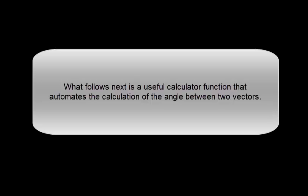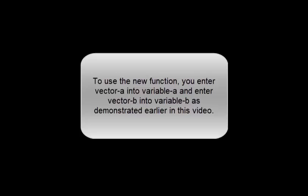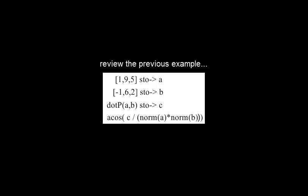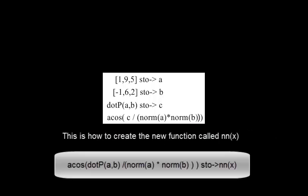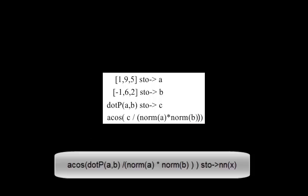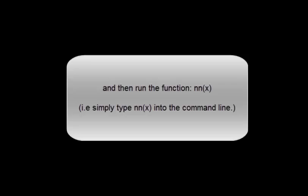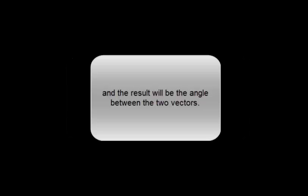What follows next is a useful calculator function that automates the calculation of the angle between two vectors. To use the new function, you enter vector A into variable A and vector B into variable B as demonstrated earlier, and then run the function. NNX is the name of the new function. To use it, enter vectors A and B into variables A and B, then run the function NN(X). Simply type NN(X) into the command line and the result will be the angle between the two vectors.